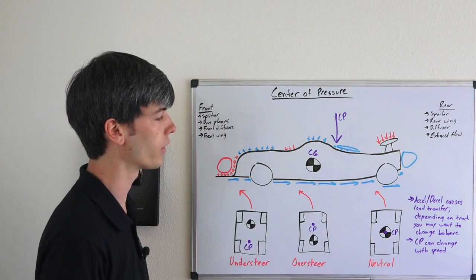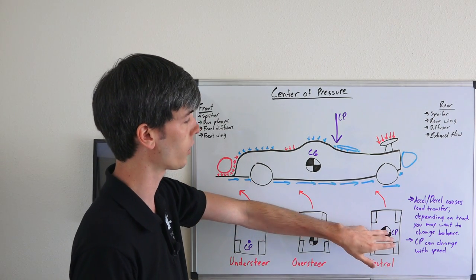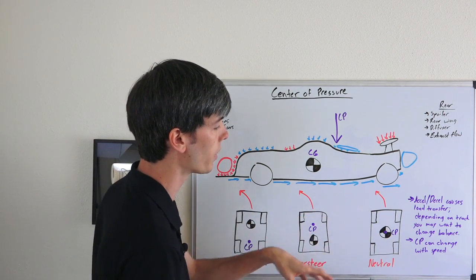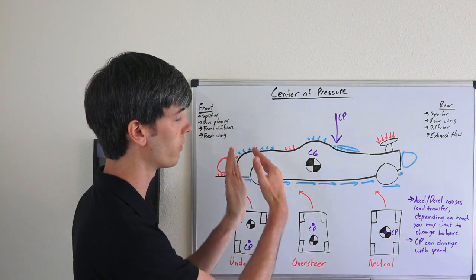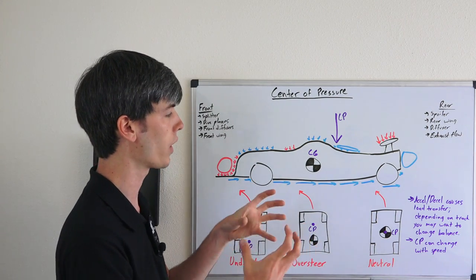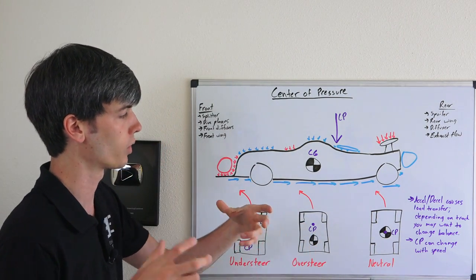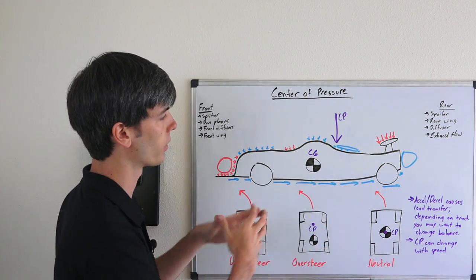So the ideal scenario is while you're going around a corner, you're going to have your center of pressure and your center of gravity line up. Then you'll have a neutrally behaving vehicle because as you go around that corner, you have even distribution of pressure and even distribution of the cornering load.